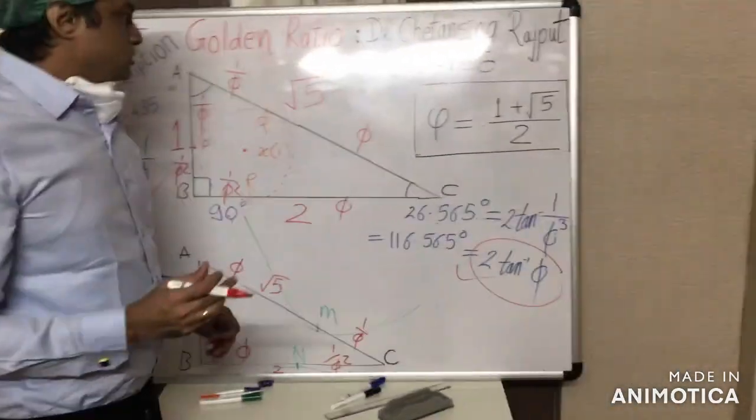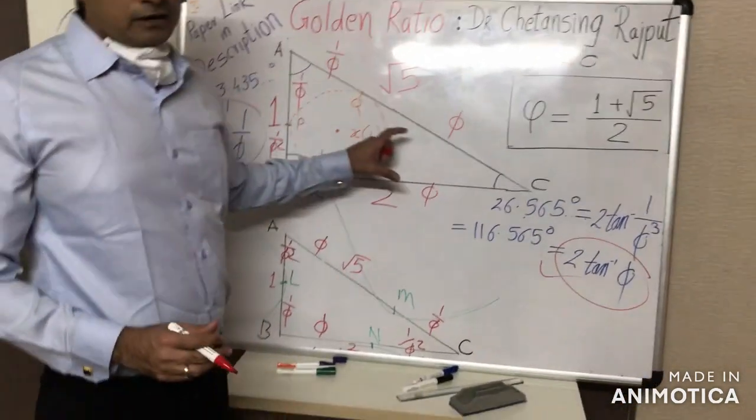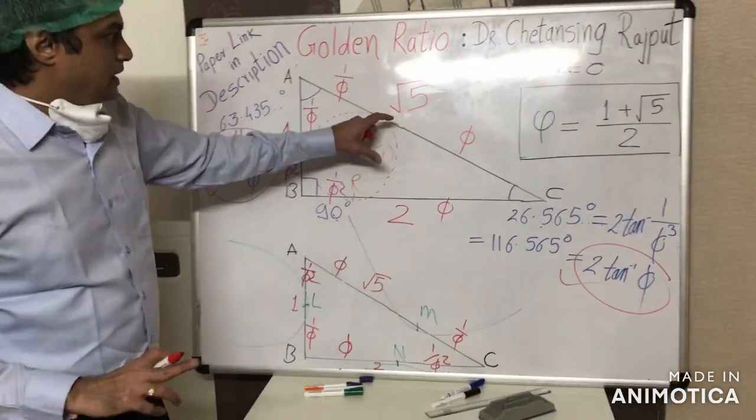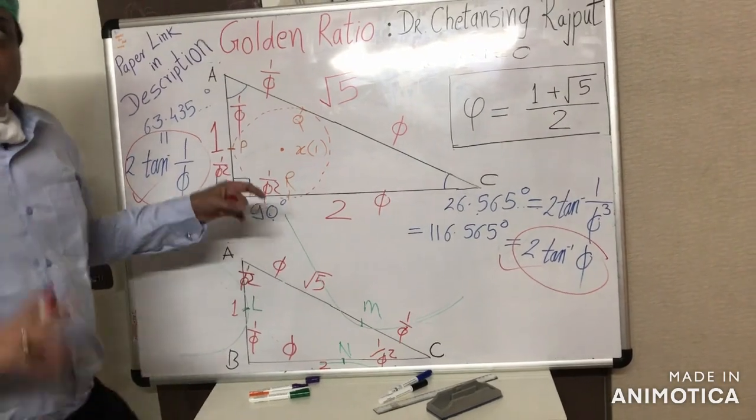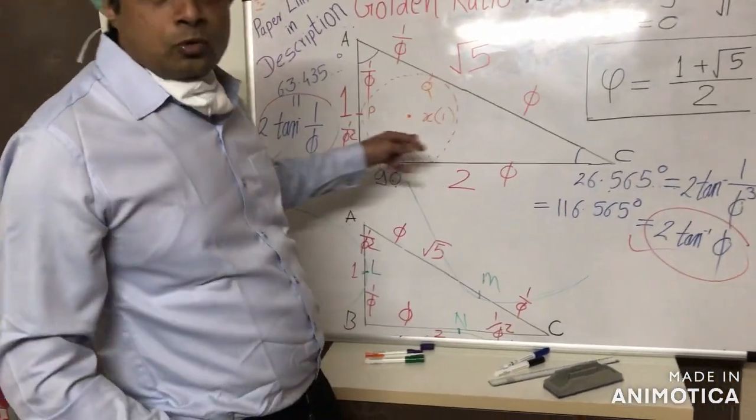Hence, the golden ratio is found in every aspect of this 1 to root 5 triangle. It is present in the side lengths, it is present in the angles, golden ratio is present in the Gergonne and Nagel triangles of this 1 to root 5 triangle.